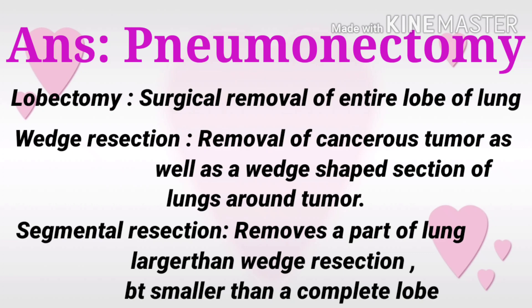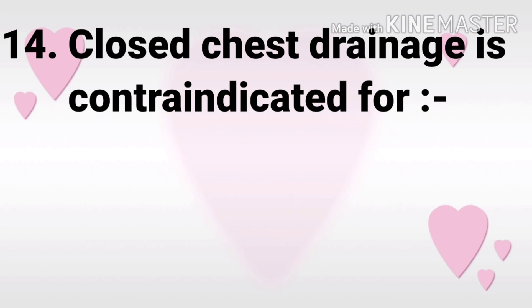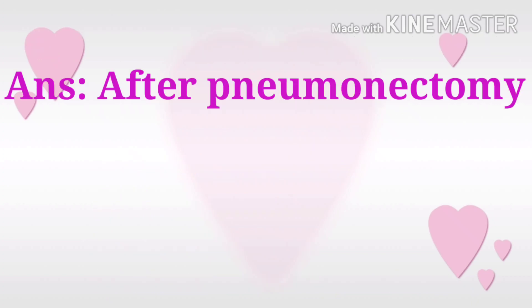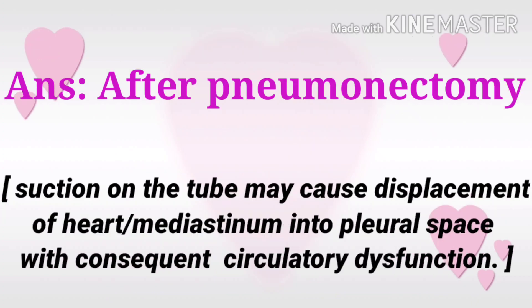Question 14: Closed chest drainage is contraindicated for? The options are fractured rib, emphysema, hydrothorax, and after pneumonectomy. The answer is after pneumonectomy, because suction on the tube may cause displacement of the heart or mediastinum into the pleural space with consequent circulatory dysfunction.